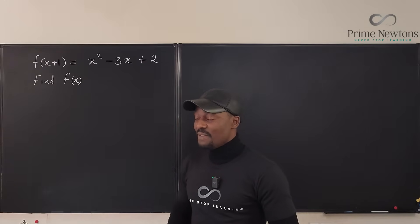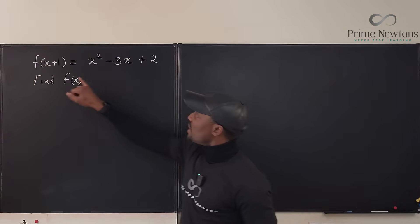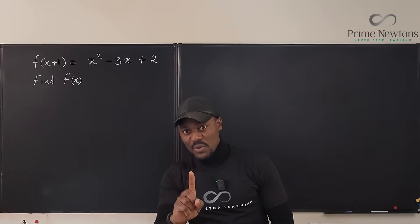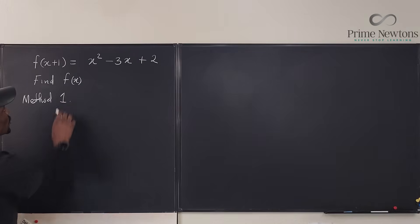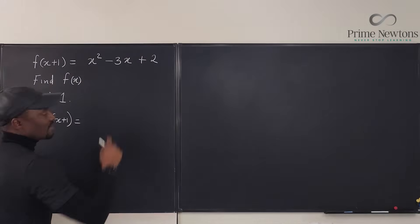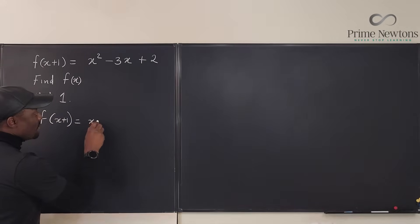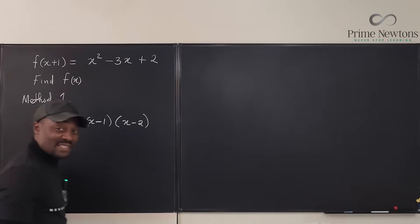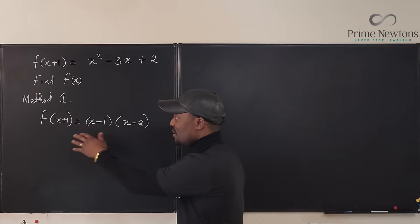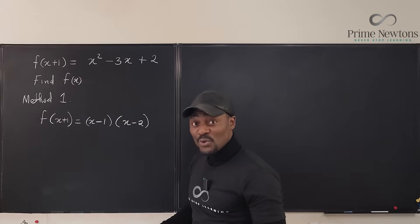So, for example, if you give this machine X plus one, it will convert X plus one into this. What it does to X plus one is not obvious, but we can make it obvious. I'm going to call this Method 1. F of X plus one equals this expression, which I can write in factored form as a quadratic: X minus one times X minus two.